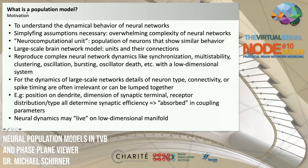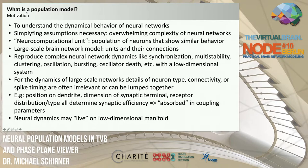Our goal is to reduce typical complex neural network dynamics — like synchronization, multi-stability, clustering, oscillations, and bursting — with a low-dimensional system. These complex dynamical patterns are commonly found in recordings of neural activity, and we wish to reproduce them with a simplified system. For large-scale networks, details such as neuron type, connectivity, or spike timing can often be lumped together into a simple coupling parameter.